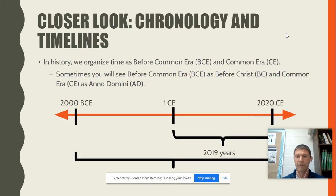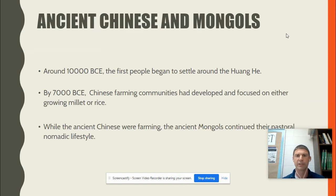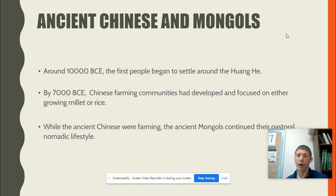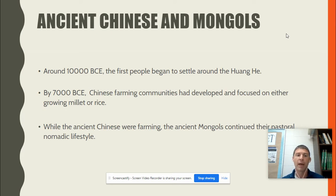One of the first things you need to realize is that we divide time into what used to be B.C. and A.D. Now we use the terms Before Common Era and Common Era. China's history spans such a long period of time. Around 10,000 B.C.E. is when people started settling near the river, the Huanhe. Then about 3,000 years later, in 7,000 B.C., farming communities started to develop around this river — a 3,000-year period of time, a long time for farming to develop.